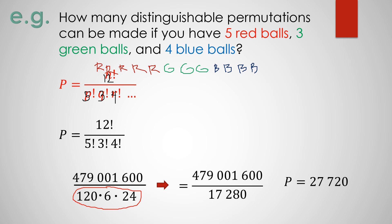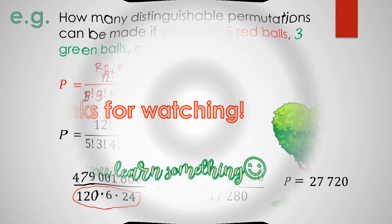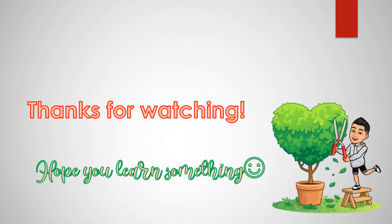This is how easy it is to deal with problems involving distinguishable permutations — problems where the given set contains duplicated or like elements. Thank you for watching. Hope you learned something from this. See you next time.